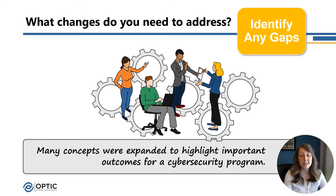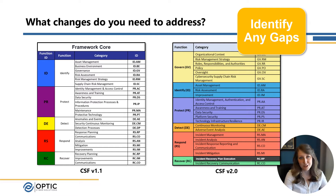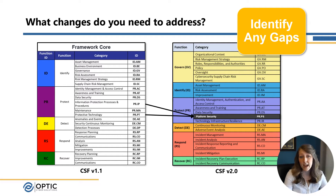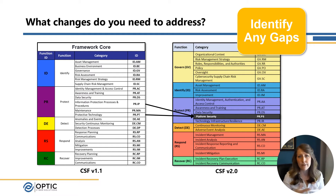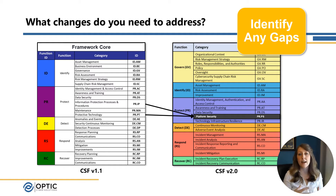Through this exercise, you'll probably find areas and gaps that should be strengthened based on the evolving cyber landscape. There aren't truly a significant number of new concepts in the updated framework, but there are many areas like governance and incident response that have been expanded to be more explicit and highlight important outcomes for a cybersecurity program. One example is the incident recovery plan execution category, which was expanded significantly and now highlights areas such as prioritizing recovery activities, verifying your backups, and ensuring the integrity of restored assets. Another significant area is platform security, a new category that largely pulls from the information protection processes and procedures category as well as the protective technologies category, focusing on security protections around platforms like hardware, software, or even virtual components.